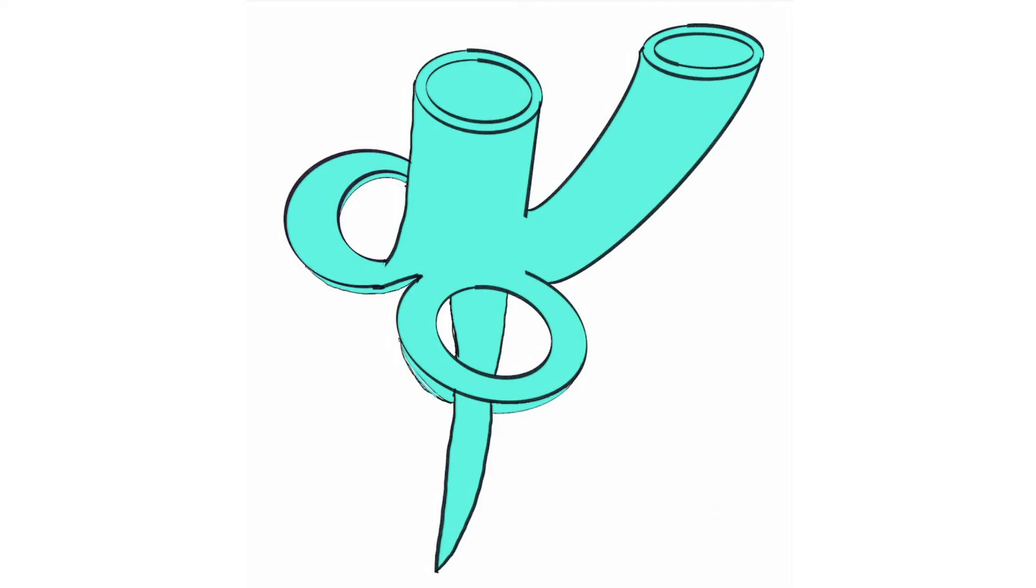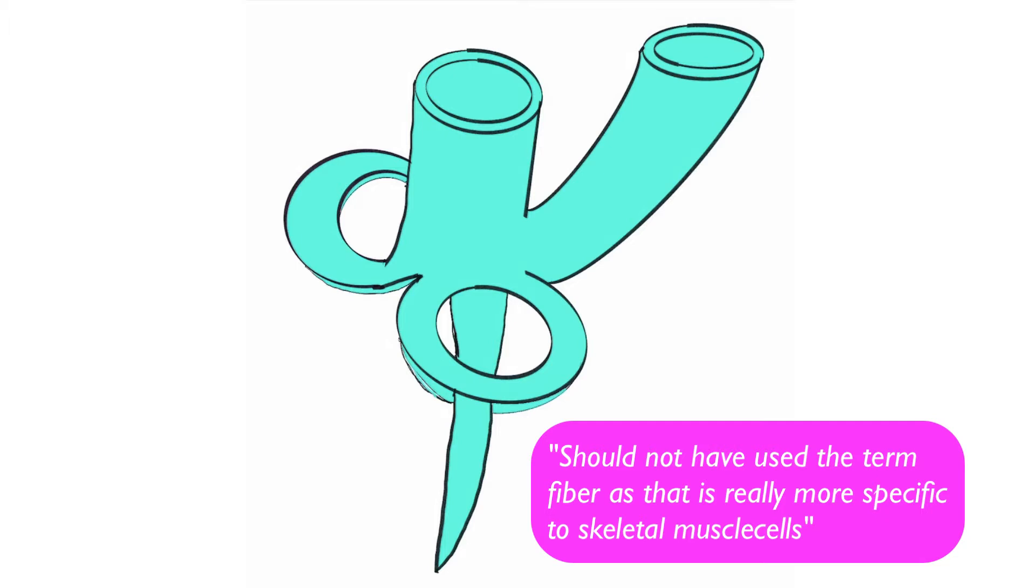In this video, I want to talk about the fibrous skeleton of the heart and also the arrangement of the muscle fibers of the heart and how that impacts ejection of blood from the ventricles.